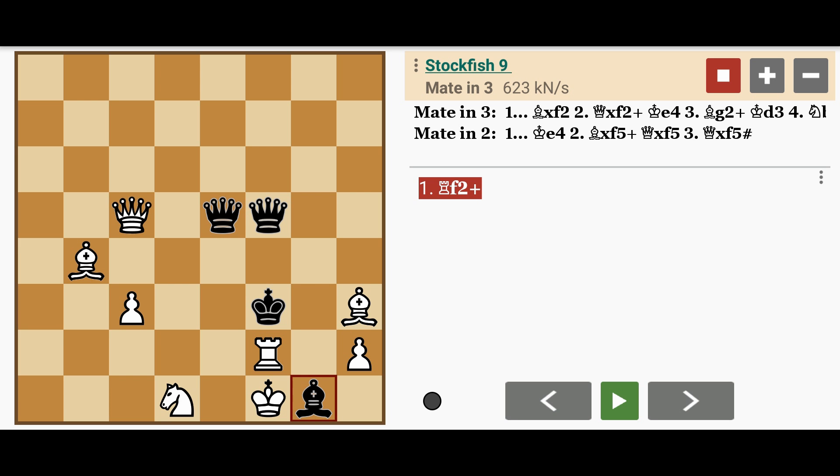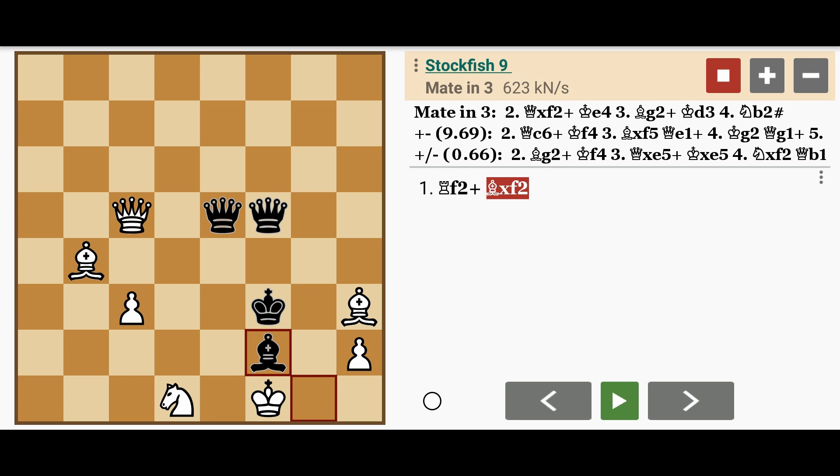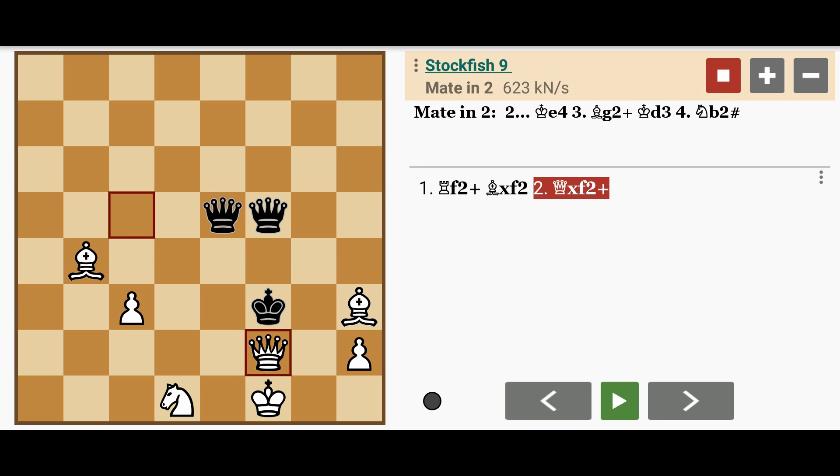Black captures by playing bishop captures rook. Now here, white must be careful. The only way to win is queen captures f2, check.